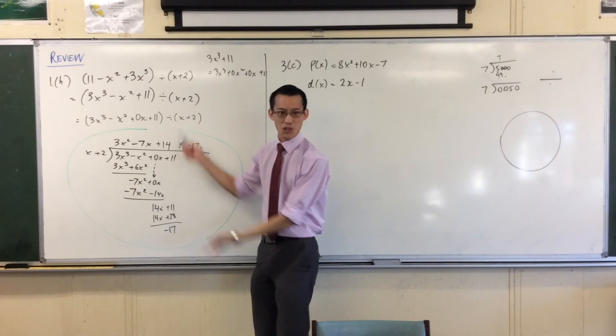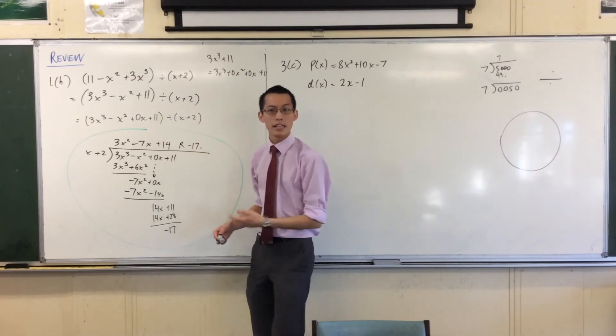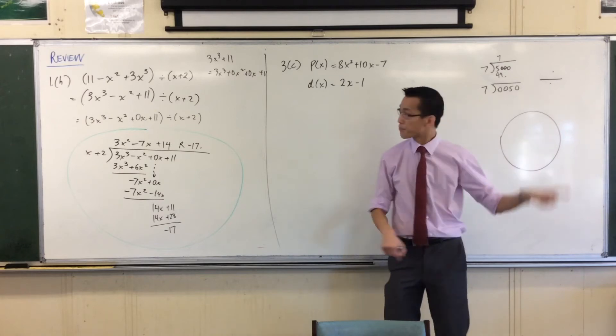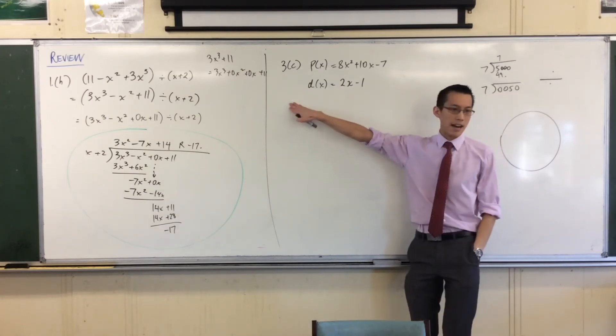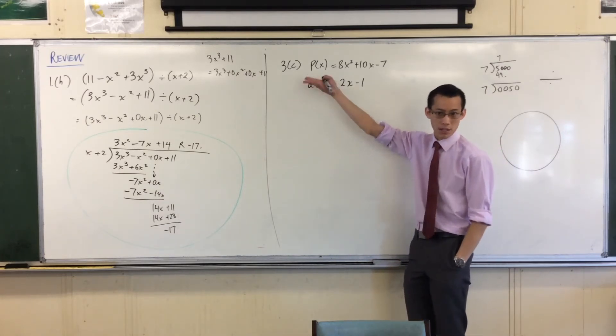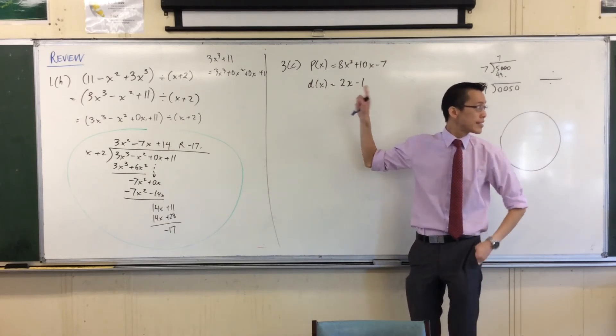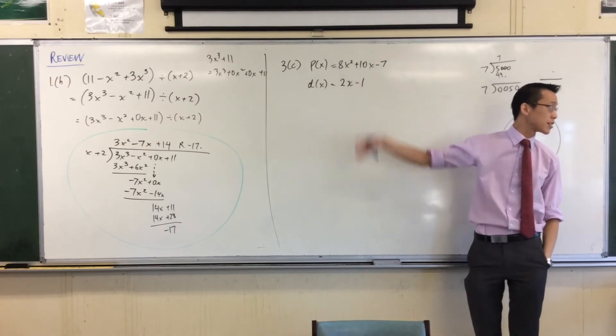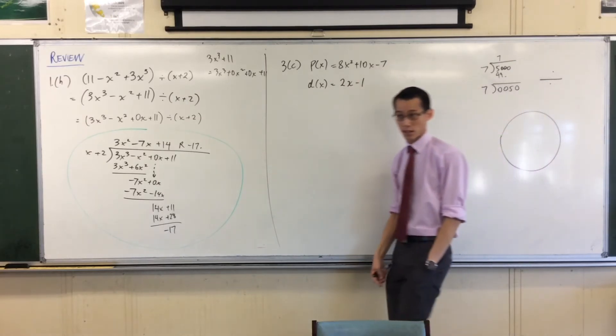More important than just, can you divide? Can you just tell me an answer? It's about, what can you do with that answer? Okay, so it says, show that 2x minus 1, I've just got a D for divisor because I'm going to divide by that in a second, show that 2x minus 1 is a factor of this polynomial and express that polynomial as a product.